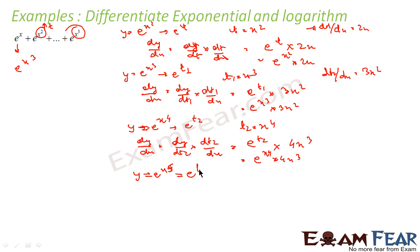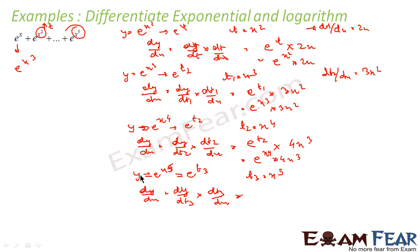For the last term, e^(x⁵): I write it as e^(t3) where t3 = x⁵. So dy/dx = (dy/dt3) × (dt3/dx) = e^(t3) × 5x⁴. Substituting t3 = x⁵, this becomes e^(x⁵) × 5x⁴.